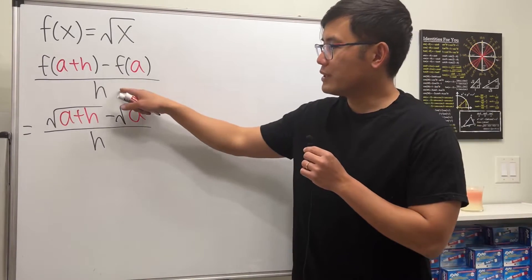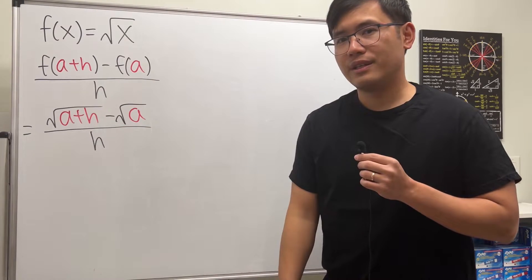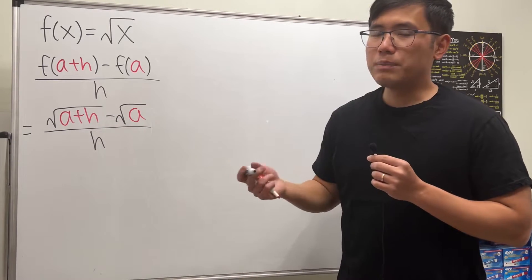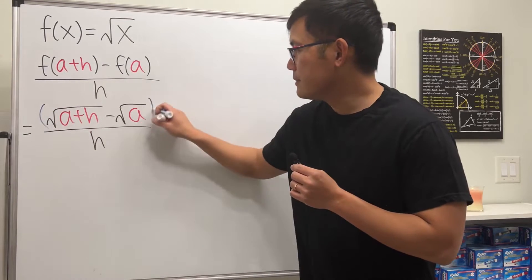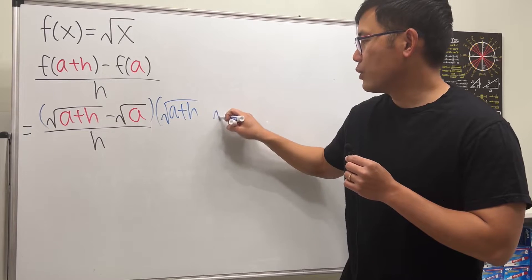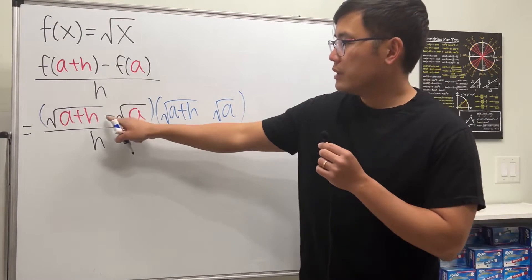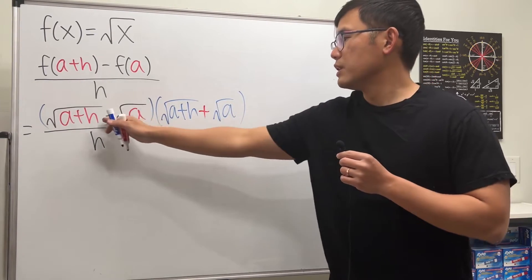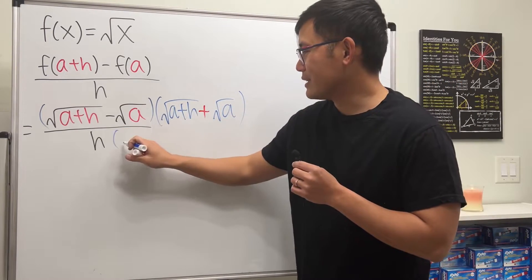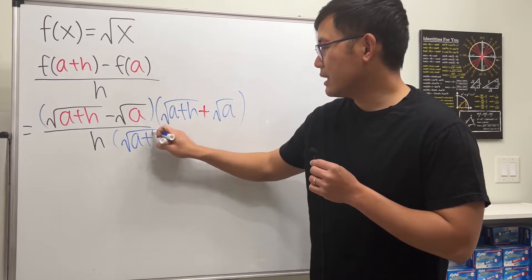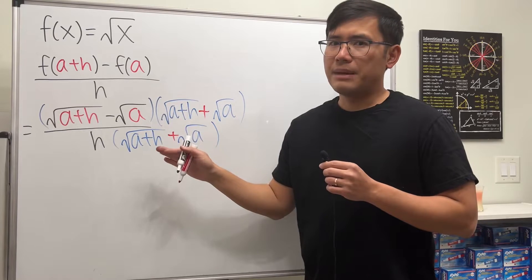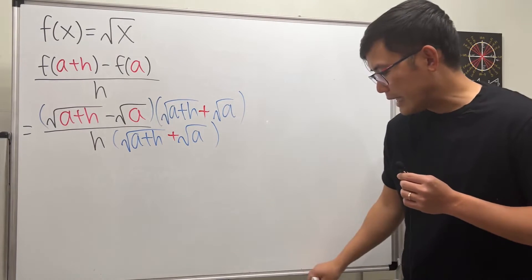Remember, when we do the difference quotient the h on the bottom will get cancelled — and here's how we make that happen with a square root. We multiply the top and the bottom by the conjugate: keep √(a+h) and √a, but change the minus to a plus. So the conjugate is √(a+h) plus √a, and we multiply both top and bottom by it.